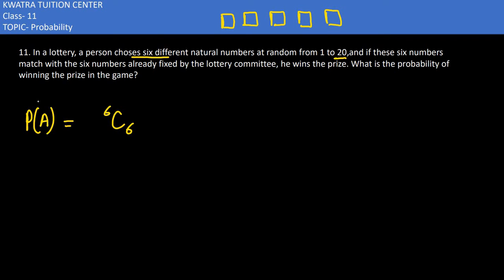So the probability P(A) equals 6C6 divided by 20C6. We can choose six numbers from the total of 20 numbers. Then we will be able to find our answer.